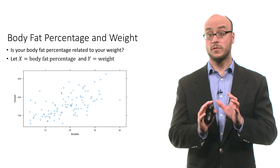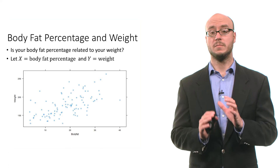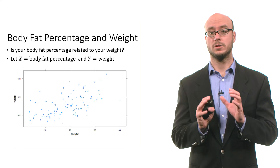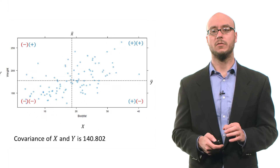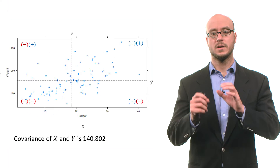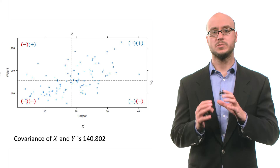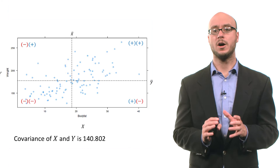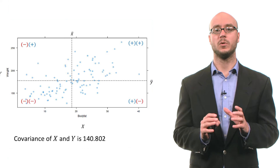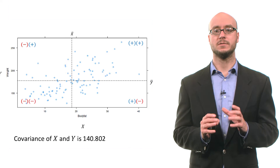So far we've talked about a measure of association called covariance. Let's calculate covariance. The covariance between these two variables is about 140.802.